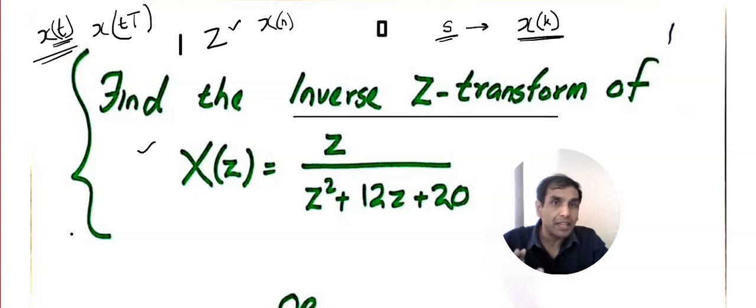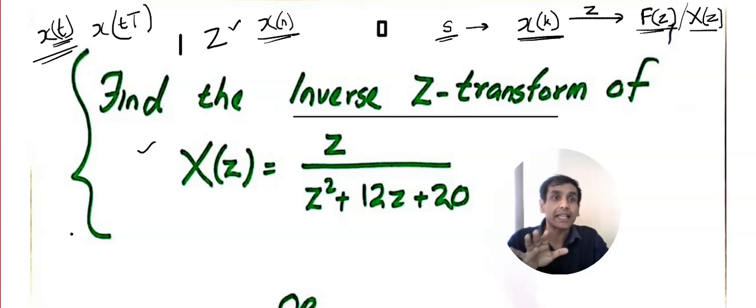The input will be x of k in my video. Once you take the z-transform, our function will be transformed into a function of z, which will be denoted by capital F of z or capital X of z. Book to book, author to author, person to person, it might be different. But this is exactly what we are going to follow in our videos. I think you got a rough idea.